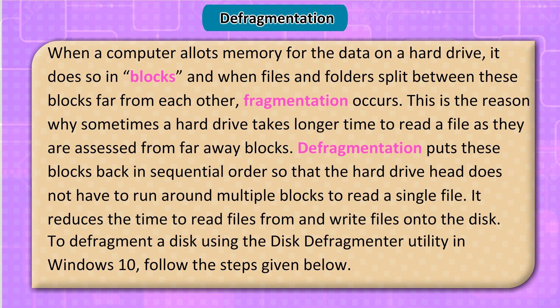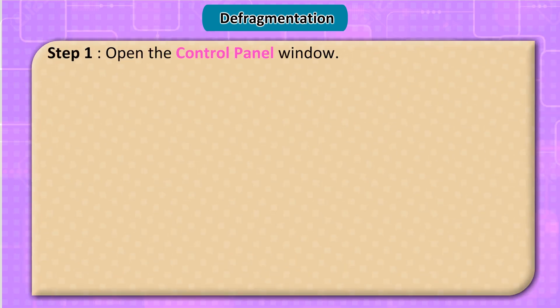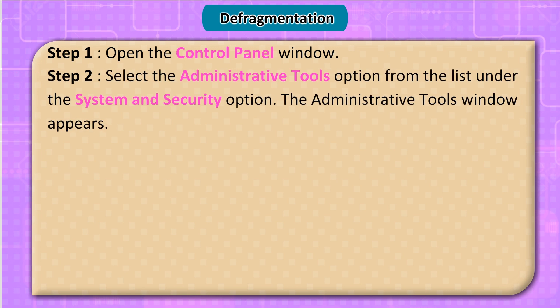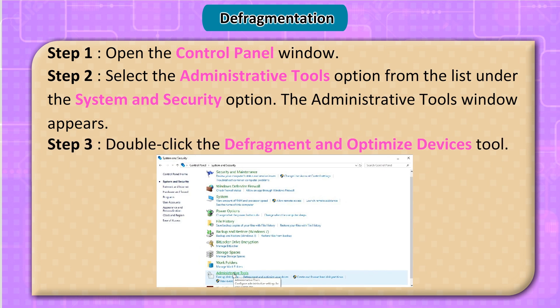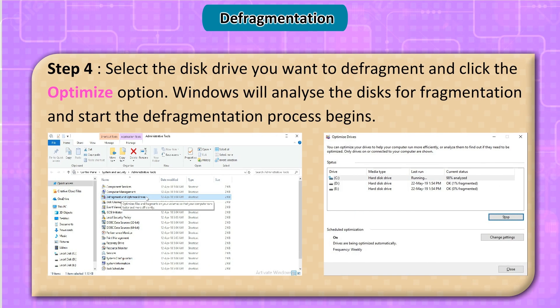To defragment a disk using the Disk Defragmenter utility in Windows 10, follow these steps. Step 1: Open the Control Panel window. Step 2: Select the Administrative Tools option under the System and Security option. The Administrative Tools window appears. Step 3: Double-click the Defragment and Optimize Devices tool. Step 4: Select the disk drive you want to defragment and click the Optimize option. Windows will analyze the disk for fragmentation and start the defragmentation process.